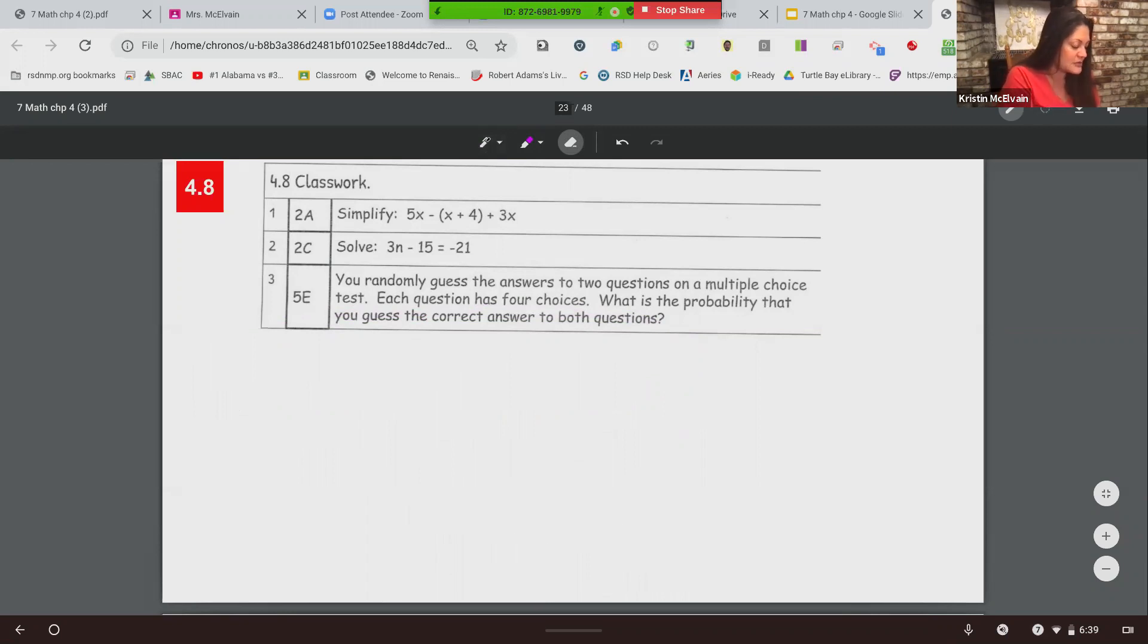In number five, this is of course, nothing you would ever do on your math test, right? It says you randomly guess the answers to two questions on a multiple choice test. Each question has four choices. What is the probability that you guess the correct answer to both questions? Okay. So for this one, it's a probability problem. So it says you guess the answers to two questions on each question. There's four choices. Okay. So out of this four choices, there is one correct out of four. That's the first problem you guessed on. Second problem you guessed on again, there is one out of four is going to be the correct answer. Multiply those out. We get one sixteenth is a probability that you guess the right answer. Okay.